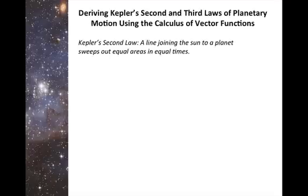Hello everybody, this is Sonia L'Engle and I'll be guiding you through the derivation of Kepler's second and third laws of planetary motion using the calculus of vector functions. Kepler's second law states that a line joining the Sun to a planet sweeps out equal areas at equal times.